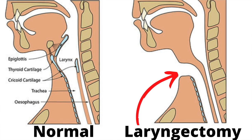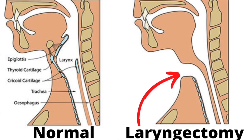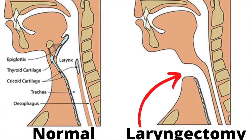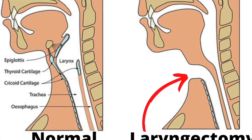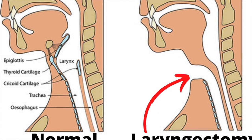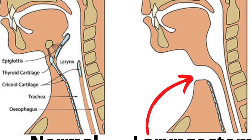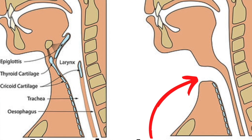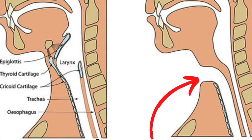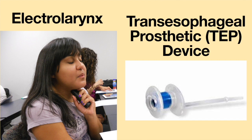An individual with a total laryngectomy will not produce speech with his natural voice because the vocal cords have been removed. Additionally, airflow with a laryngectomy is redirected out through the stoma in the neck and does not pass through the upper airway. Special devices called electrolarynx and tracheoesophageal prosthetic devices help people with laryngectomies produce speech.